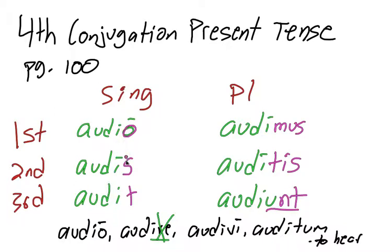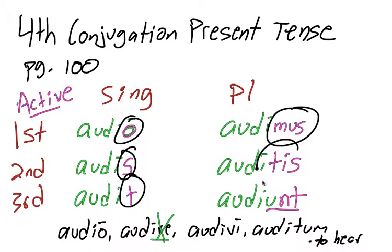So the full conjugation is audio, audis, audit, audimus, auditis, audiunt, and the translations are all the same. So audio is I hear, audis is you hear, audit, he she it hears, audimus we hear, auditis you all hear, and audiunt they hear. And by the way, I forgot to mention that we're conjugating this in the active, but we knew that was active because we have our active endings which are o-s-t-mus-tis-ent.